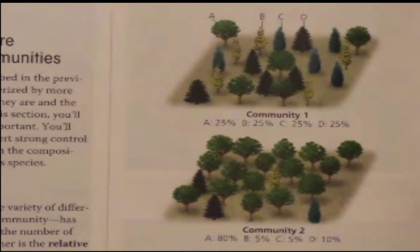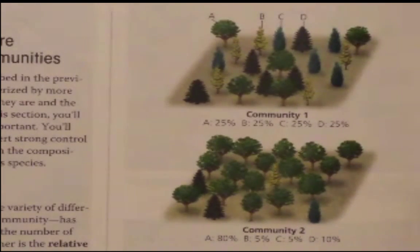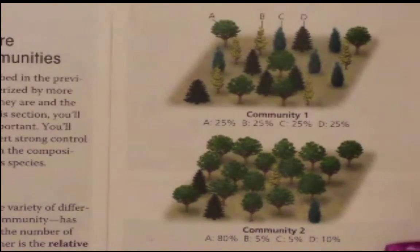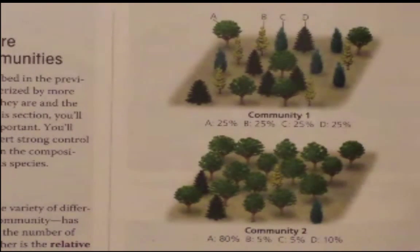We might intuitively think that community 1 is more diverse, and your book includes a fairly complicated equation to confirm that community 1 is indeed more diverse. We're not going to ask you to apply or know that equation. But you should be familiar with these two aspects of describing diversity: species richness and relative abundance.